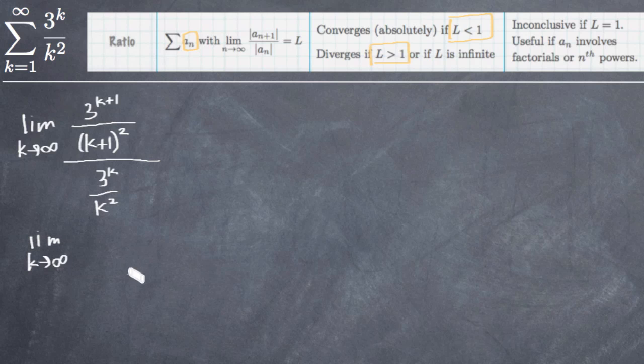So in order to simplify, the first thing we'll do is turn this into a multiplication problem instead of a division problem. Remember that when you divide by a fraction, it's the same thing as multiplying by its inverse. So what we can say is 3 to the k plus 1 divided by k plus 1 squared, and instead of dividing by this fraction, we'll multiply by the fraction's inverse, or basically flipping it upside down. So instead of k squared being in the denominator, we put it in the numerator, and instead of 3^k being in the numerator, we'll bring it to the denominator.